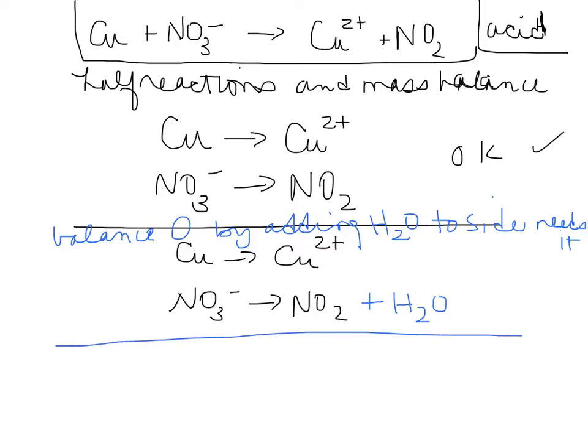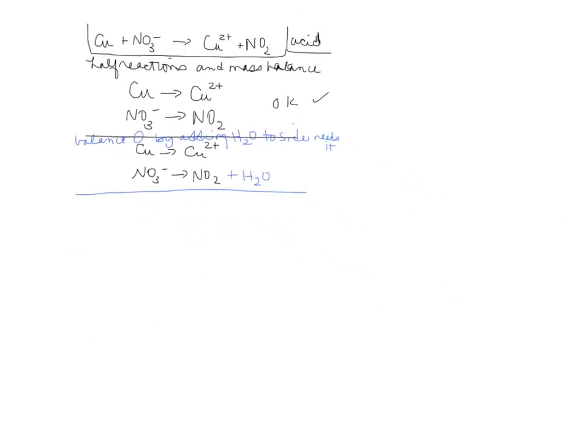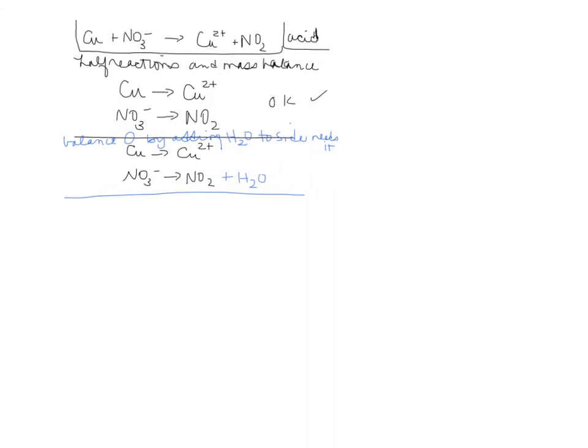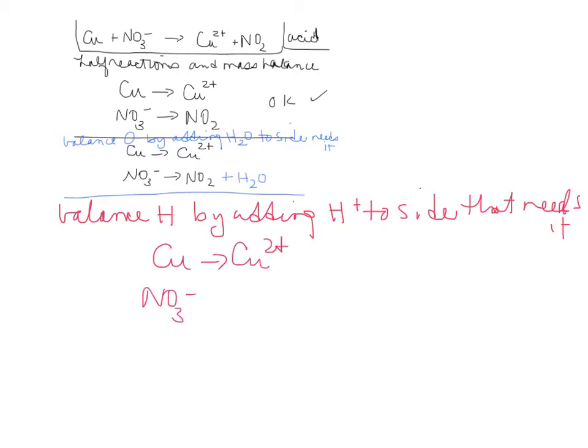For the next step, let me make this part a little bit smaller here. And then for the next step, we're going to balance hydrogen by adding H plus to the side that needs it. And we have copper forming copper 2 plus, nitrate forming NO2 plus H2O. There is no hydrogen in the top half reaction, so we don't worry about it. In the second half reaction, you've got hydrogen on the right-hand side, and so you're going to add 2H plus to the left to balance that.